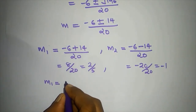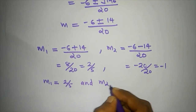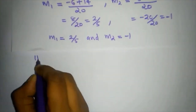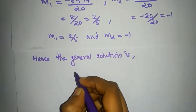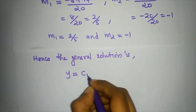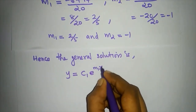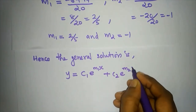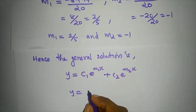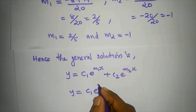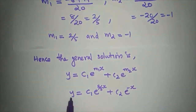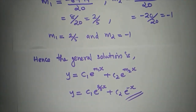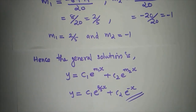So m1 equals 2/5 and m2 equals minus 1. We have two distinct roots, so the general solution is y equals c1·e raised to (2/5)x plus c2·e raised to minus x. We will discuss further questions in the next video. Please like this video and subscribe to our channel. Thank you.